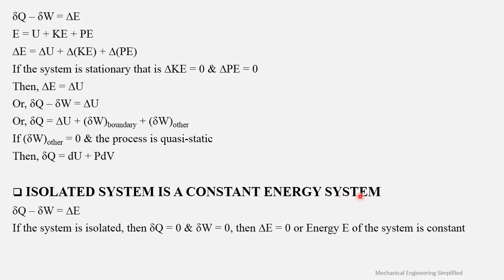Another important conclusion: an isolated system is a constant-energy system. An isolated system has neither heat transfer nor work transfer. Therefore δQ = 0 and δW = 0, which gives δE = 0, meaning the energy of the system remains constant.